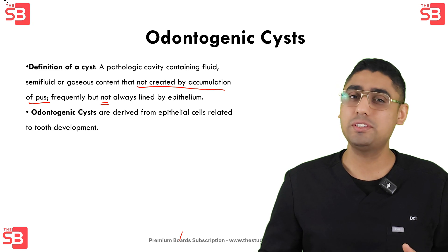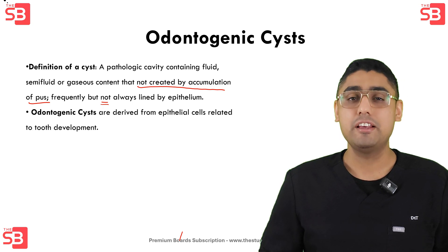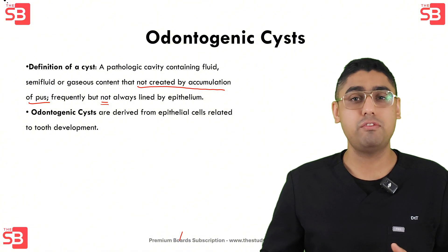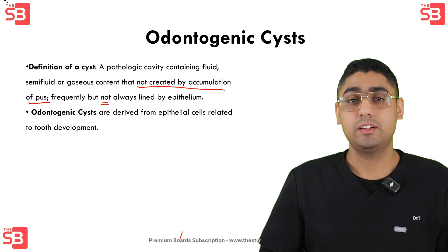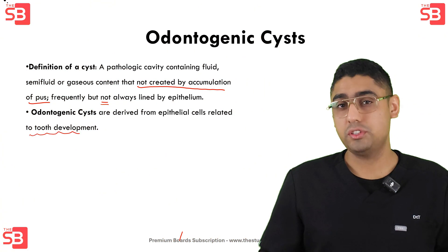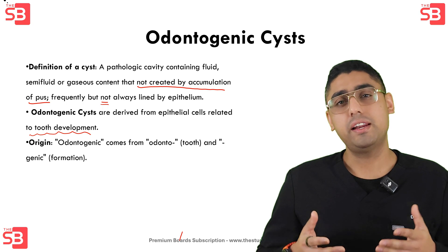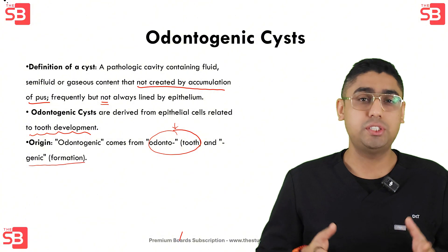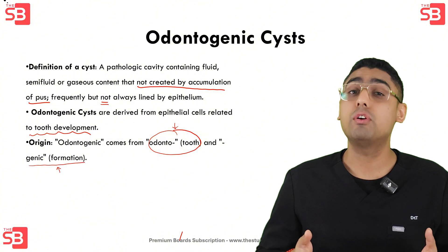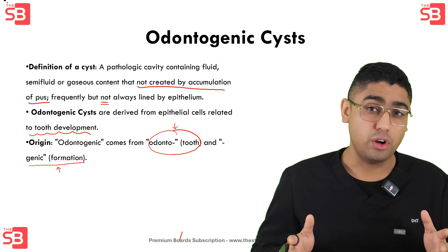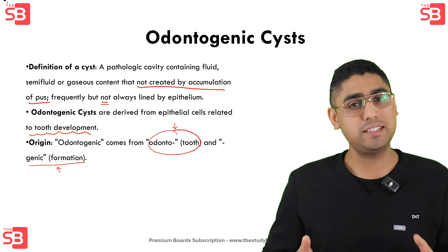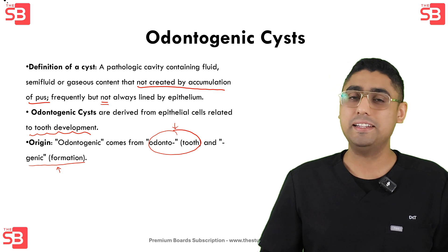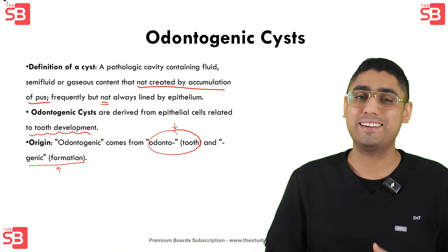When we talk about odontogenic cysts, we are referring to cysts that originate from the tissues involved in tooth development. The word odontogenic gives us a clue — 'odonto' relates to teeth and 'genic' means formation. So odontogenic cysts are essentially cysts that form from leftover epithelial cells involved in forming our teeth.